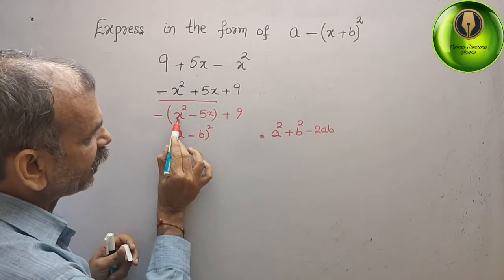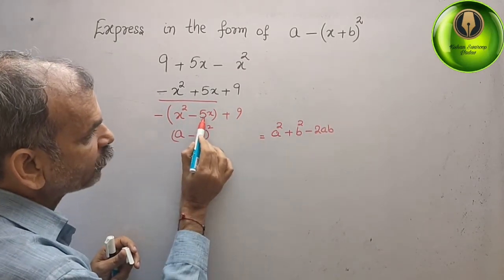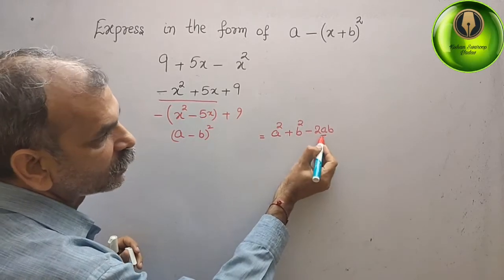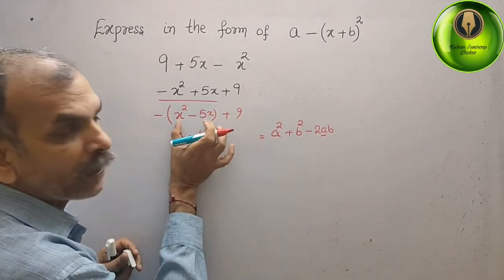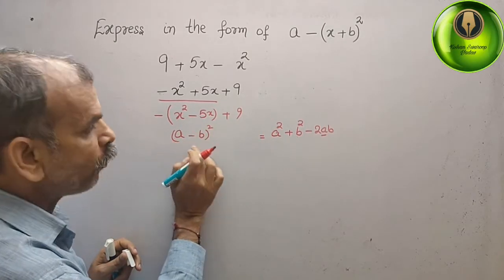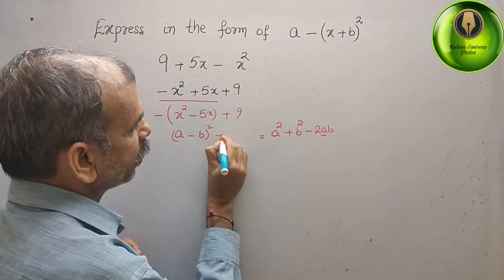Here you can see, x square, we can go for a square. Minus 5x, it will go for this, minus 2ab. But b square is not there in this bracket. So for making a minus b whole square, what we have to do? We have to subtract that minus b square.